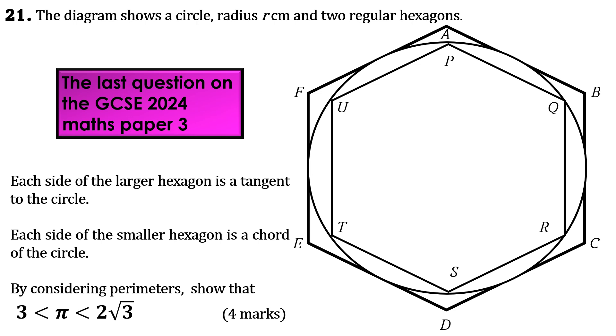Okay, this is what the question looks like. The diagram shows a circle radius r centimeters and two regular hexagons. Each side of the larger hexagon is a tangent to the circle. Each side of the smaller hexagon is a chord of the circle.